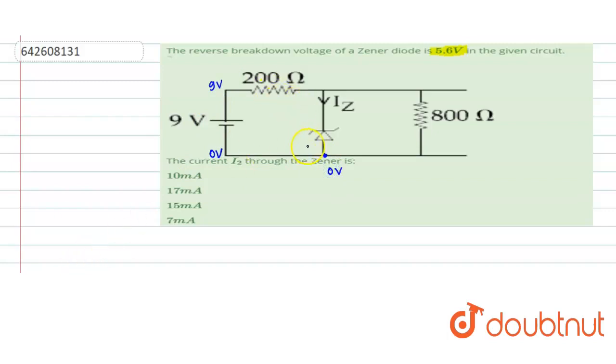Since the Zener diode is under the reverse breakdown voltage, the potential difference across should be 5.6 V. So if this is at 0 V, this will be at 5.6 V.